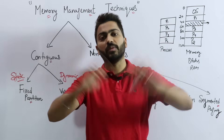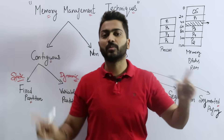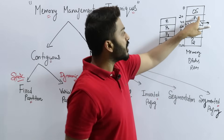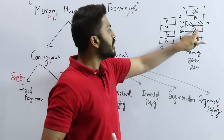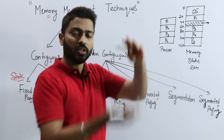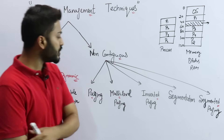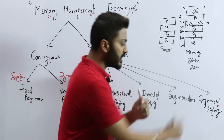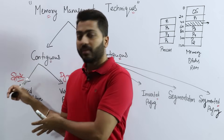In non-contiguous, discontinuous allocation is done — partitions can be placed at separate, different locations. So P1 is placed here, P3 here, P4 and P2 elsewhere, and partitions of other processes may also be interspersed. That is the concept of non-contiguous allocation. The major techniques used here are paging, multilevel paging, inverted paging, segmentation, and segmented paging.